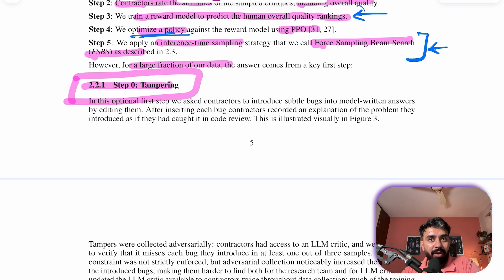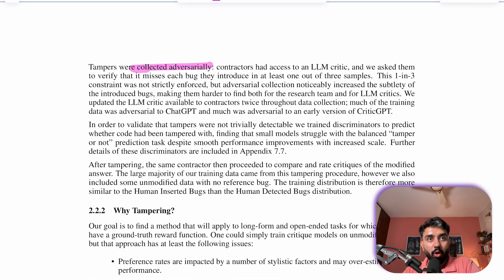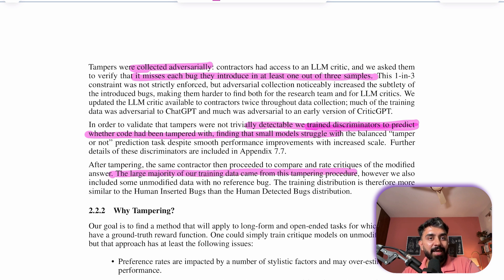Additionally, there's an optional first step called tampering. A large fraction of the data actually comes from this particular step. Here the contractors introduce subtle bugs into the model written answers and explain the problems they introduced. This adversarial approach makes the bugs harder to detect, and contractors also verify that an LLM critic misses these bugs at least once in three samples. To validate, discriminators are trained to predict whether the code has been tampered with or not.